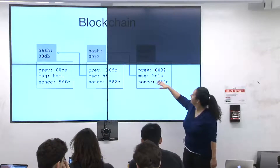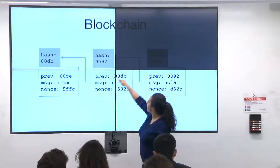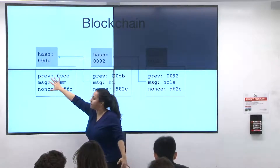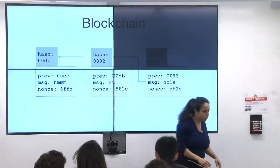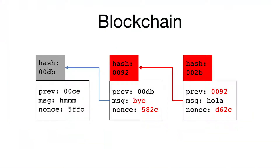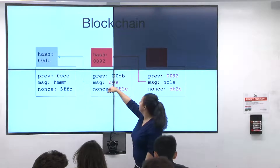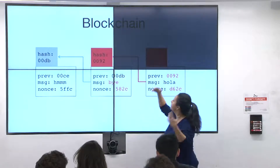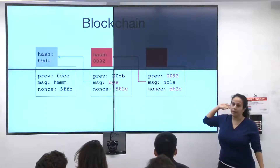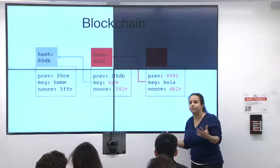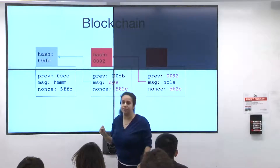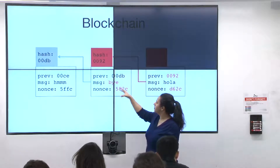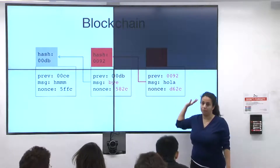We are implicitly pointing to the previous block by including its hash in the following block. This is a different message, a different nonce, and it includes the hash of the previous block. By including that hash, it's also implicitly including the one before. So if you change anything about previous blocks — for example, if you change the message — you need to change the nonce to get the hash to compute right. That change will trickle down through the entire blockchain. That's what makes these things tamper-proof.